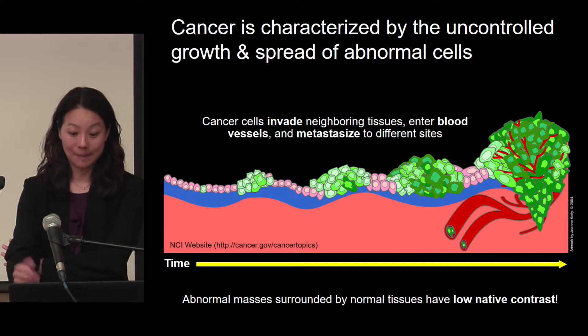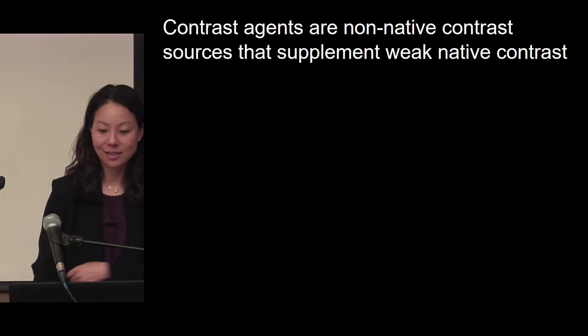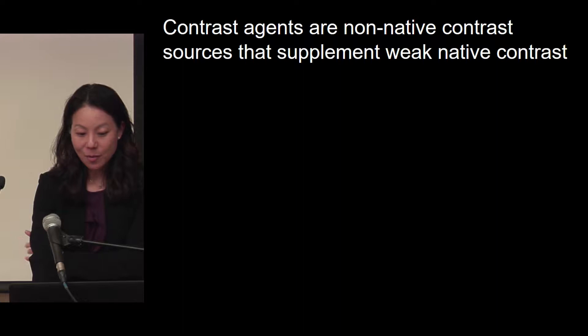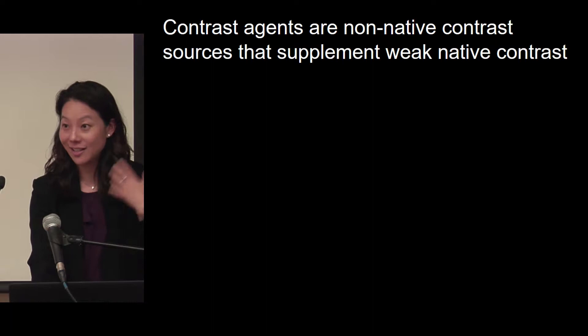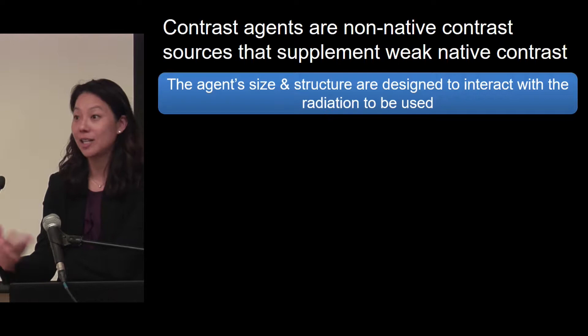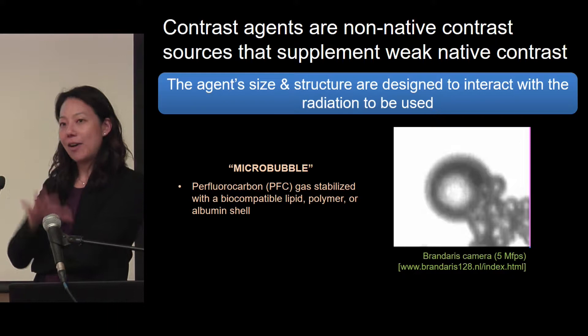Contrast agents are non-native sources of contrast that supplement that weak native contrast. We inject them in the patient and look at where they go relative to the anatomy. How we pick the contrast agent depends on the imaging modality as well as the disease pathology we want to understand or characterize. I'm going to focus on ultrasound imaging and ultrasound contrast agents, although we also work in X-ray and MRI agents.